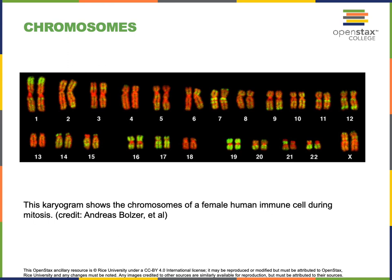Chromosomes contain the genetic instructions in the form of DNA wrapped around proteins known as histones. The chromosomes are linear strands of DNA wrapped around protein. There are 23 pairs of homologous chromosomes in a diploid cell.